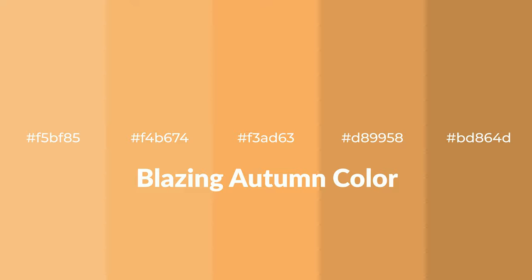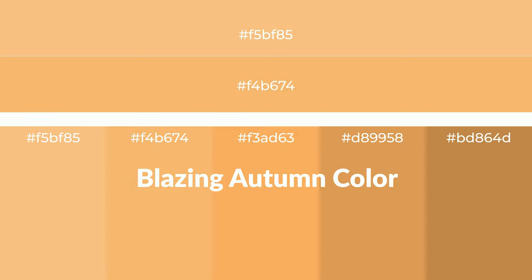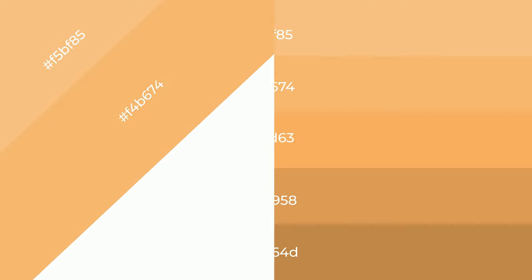Warm shades of blazing autumn color with brown hue for your next project. To generate tints of a color, we add white to the color — tints create light and exquisite emotions. To generate shades of a color, we add black to the color, and it is used in patterns, 3D effects, and layers. Shades create depth and drama.